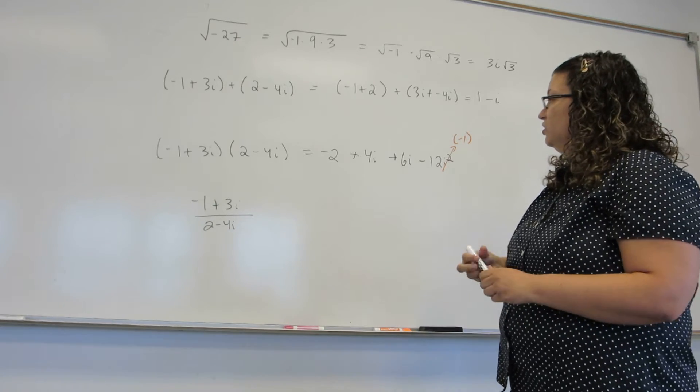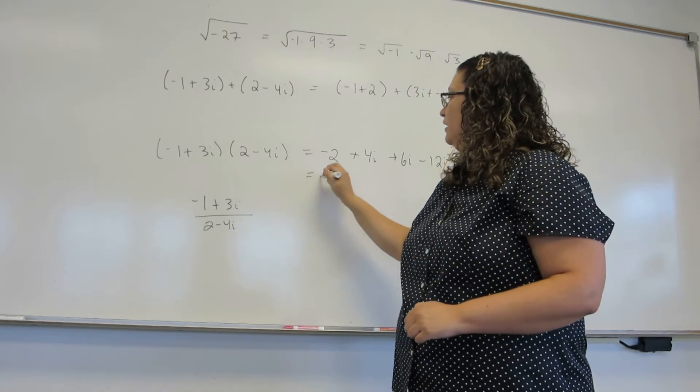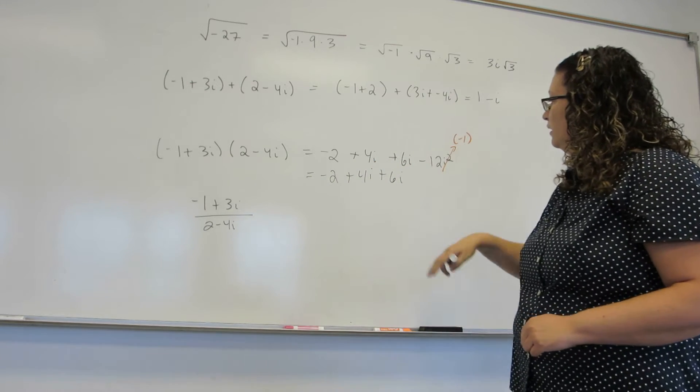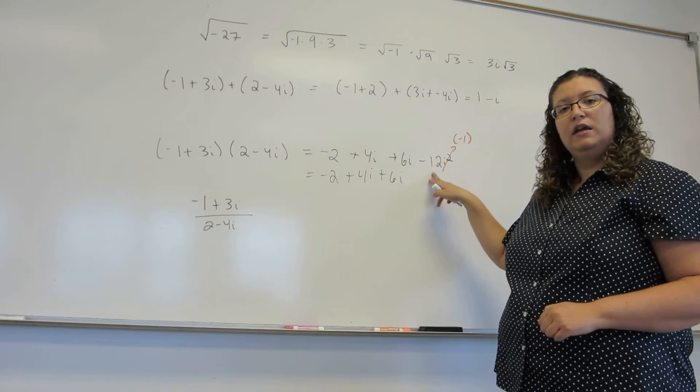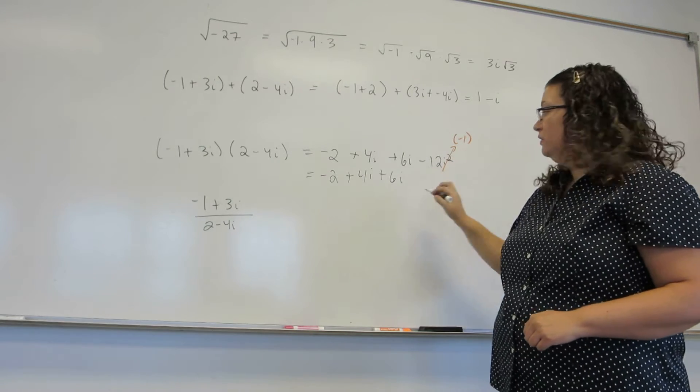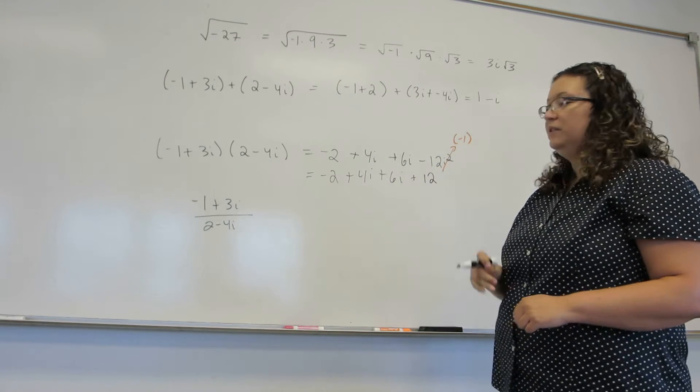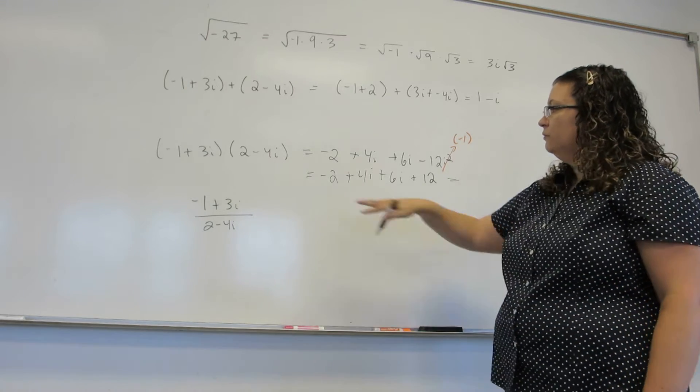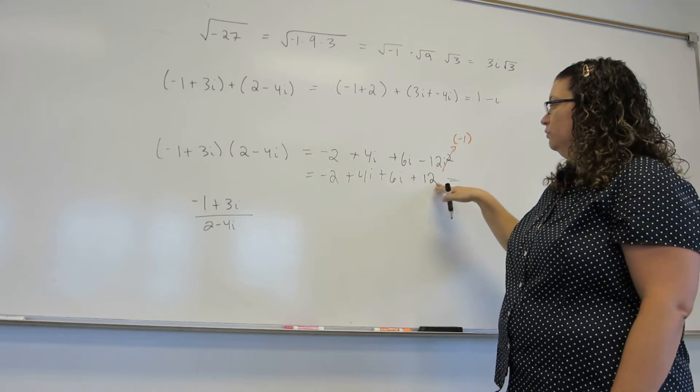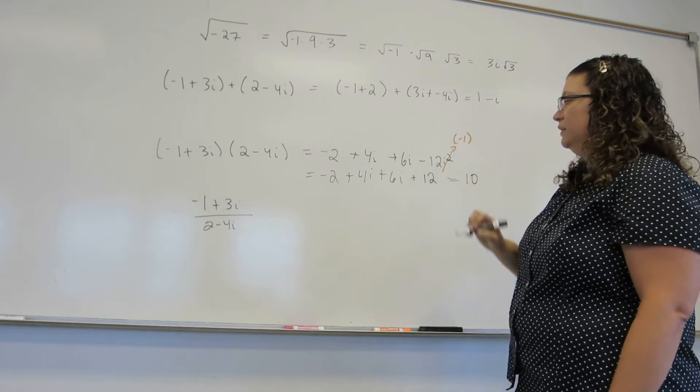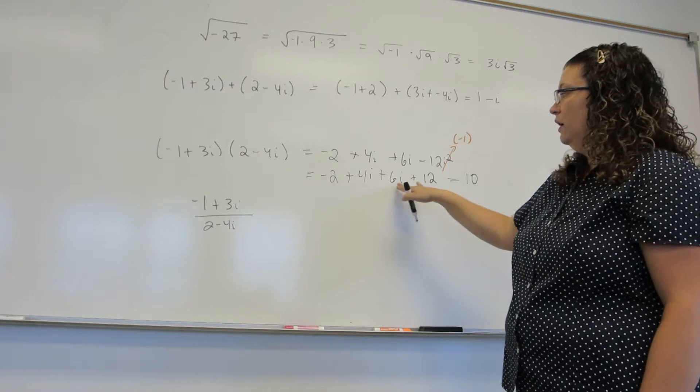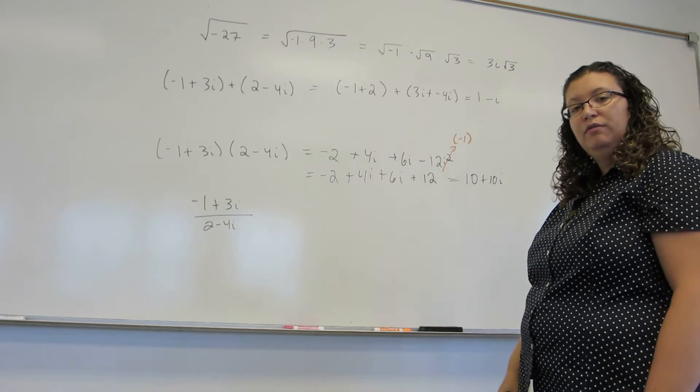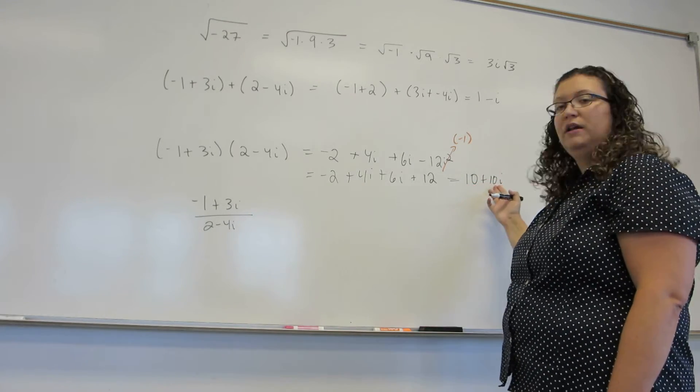So what does this turn into? We have the negative 2 plus 4i plus 6i. But here we really have minus 12 times minus 1 which is positive 12. So now combining our like terms. Minus 2 plus 12 is 10. 4i plus 6i is 10i. And again we're able to get a complex number of the form a plus bi. No powers of i needed.